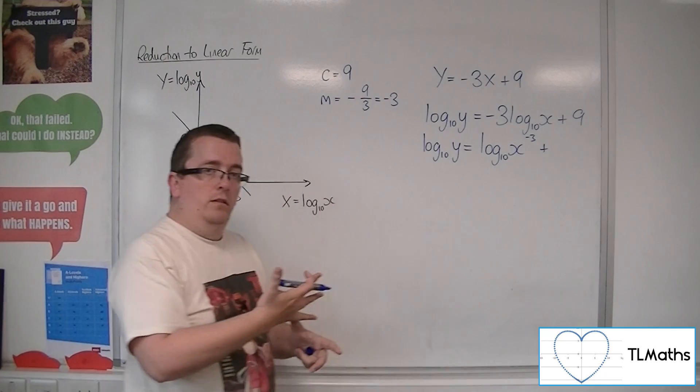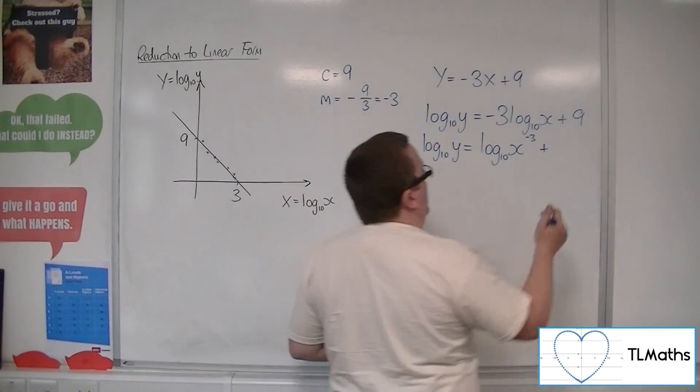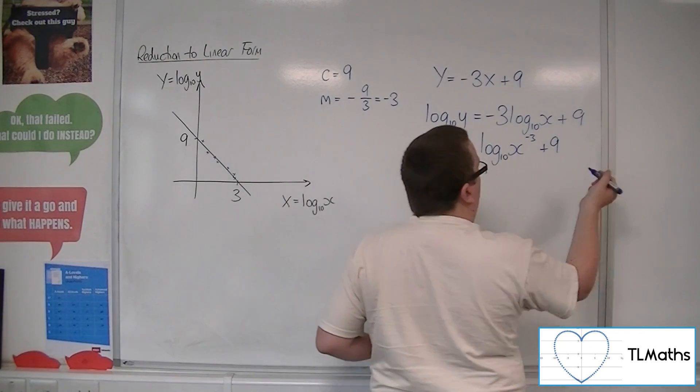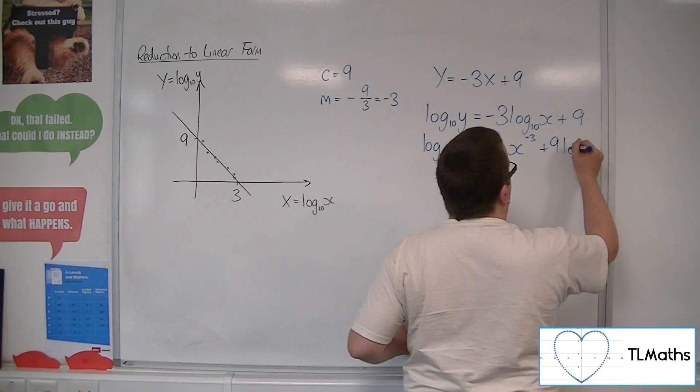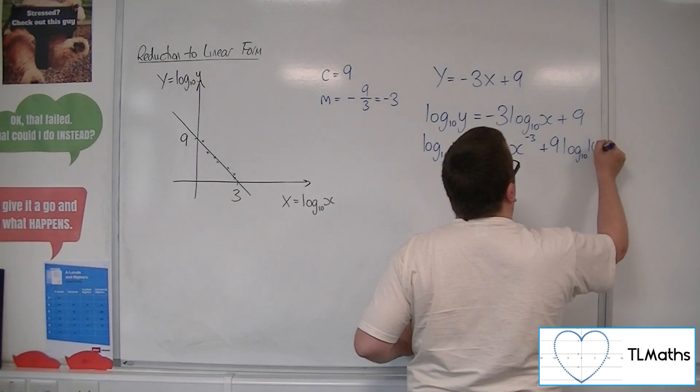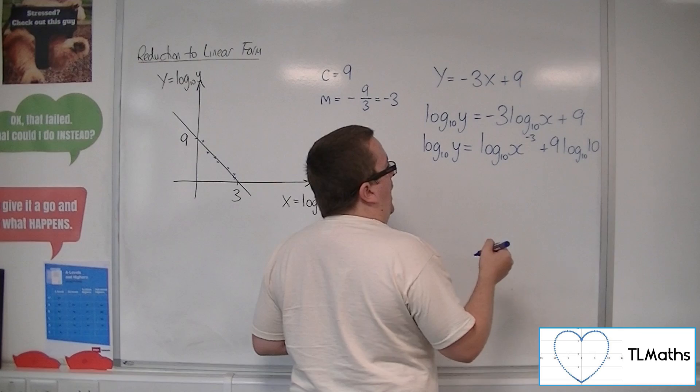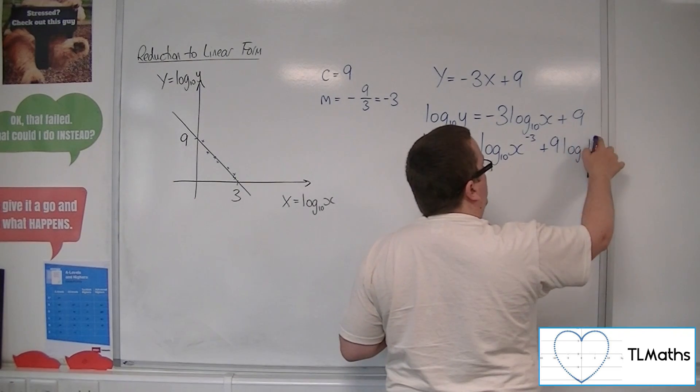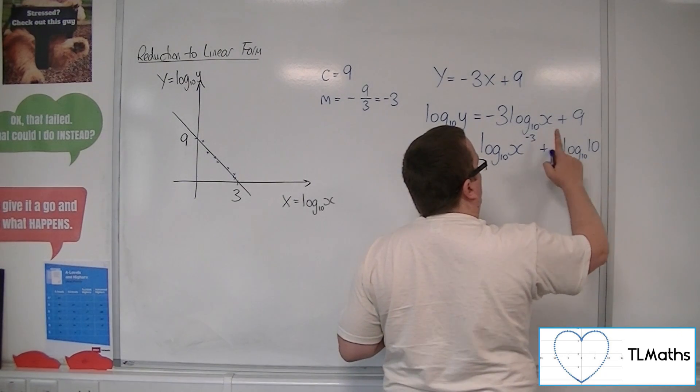Now, 9 is the same as 9 times 1, and we know that 1 can be written as log 1010. And so you can then bring the 9 up to the power of the 10.